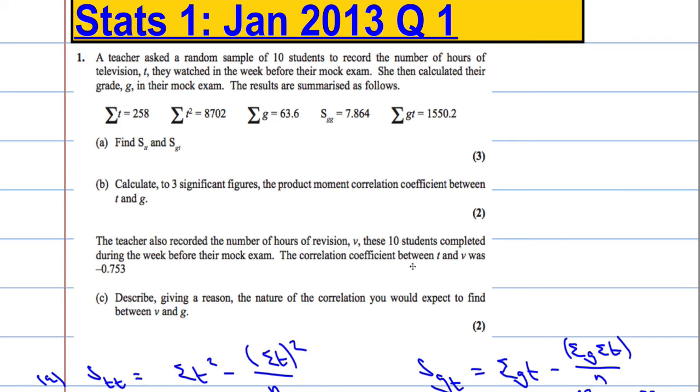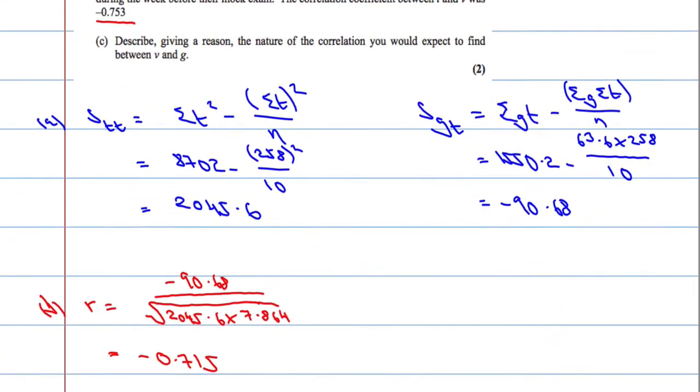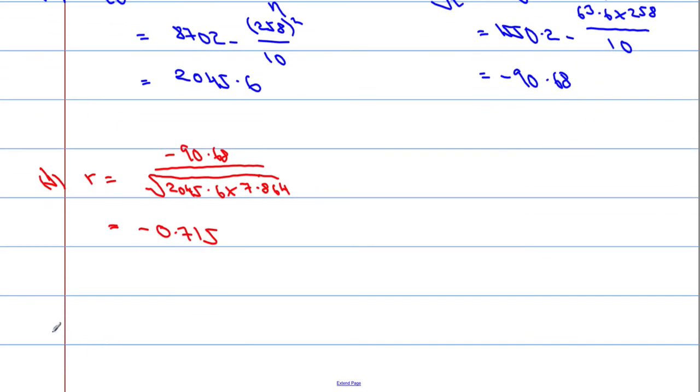Okay, so let's try and get our heads around this. V is the number of hours spent revising, and T is the number of hours watching television. So as the number of hours of revising increased, the number of hours watching television decreased. So that's suggested by that negative correlation coefficient. So as V increases, T decreases.